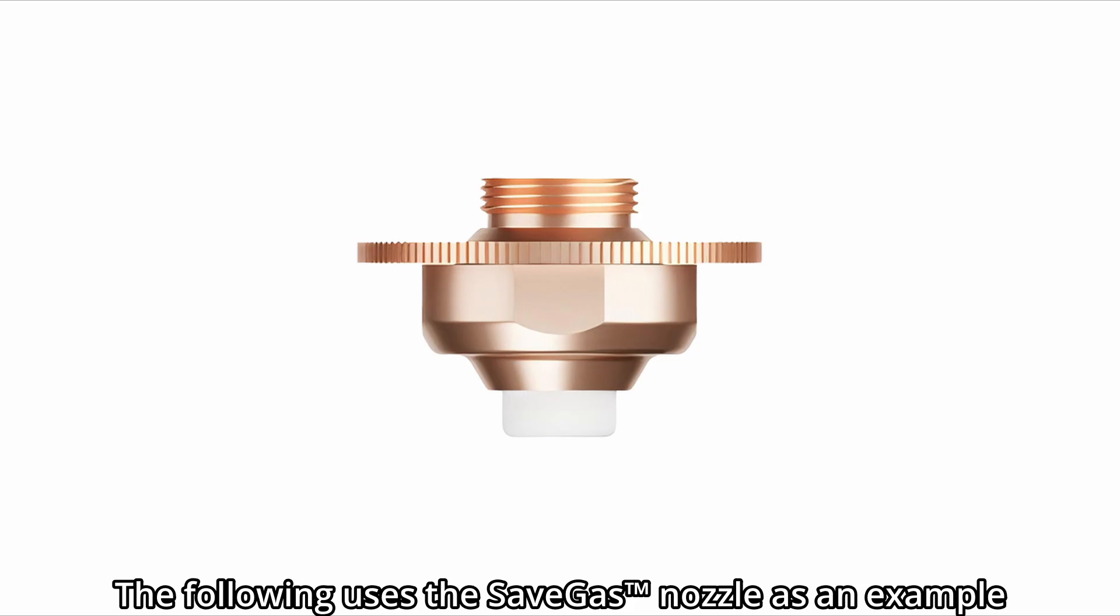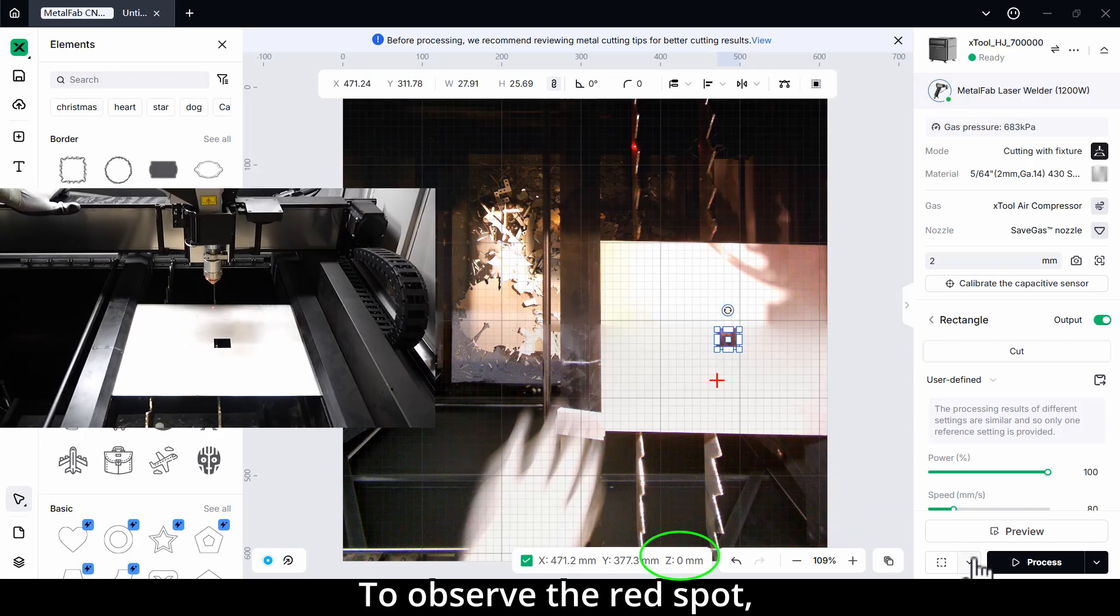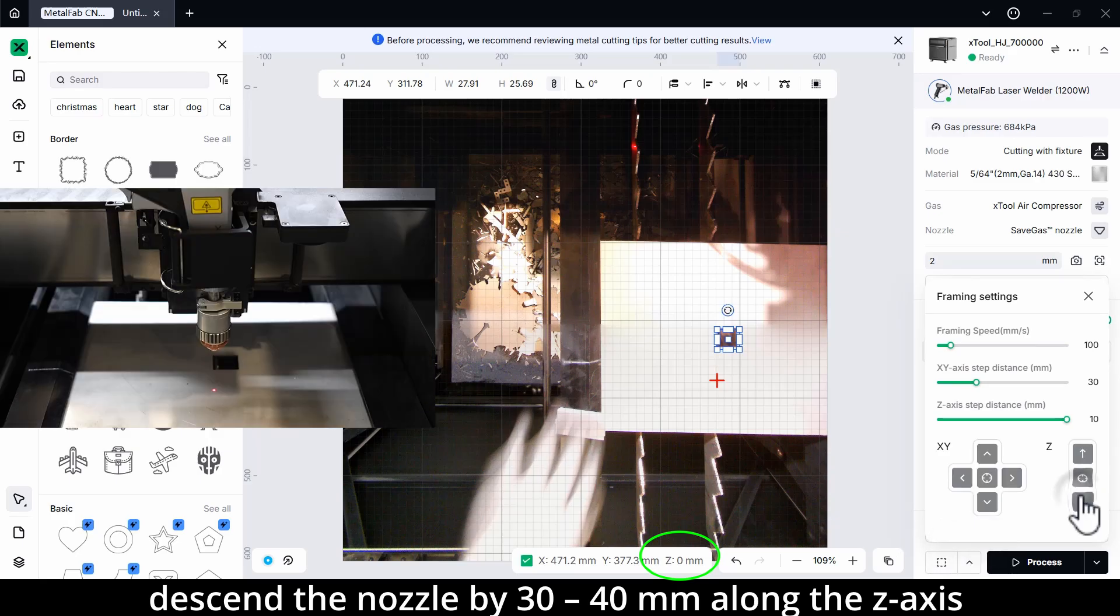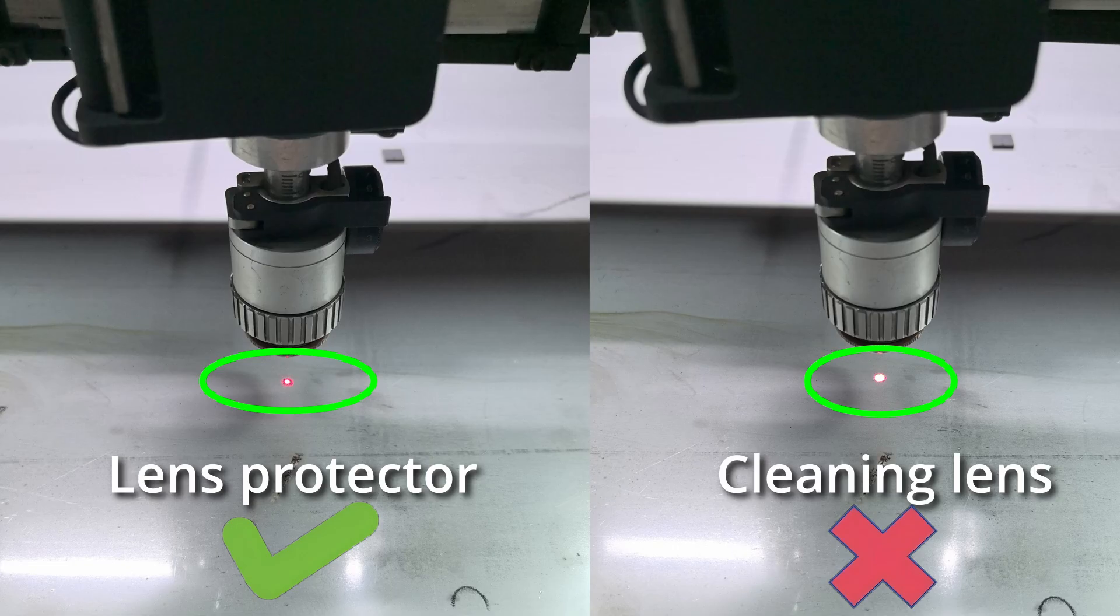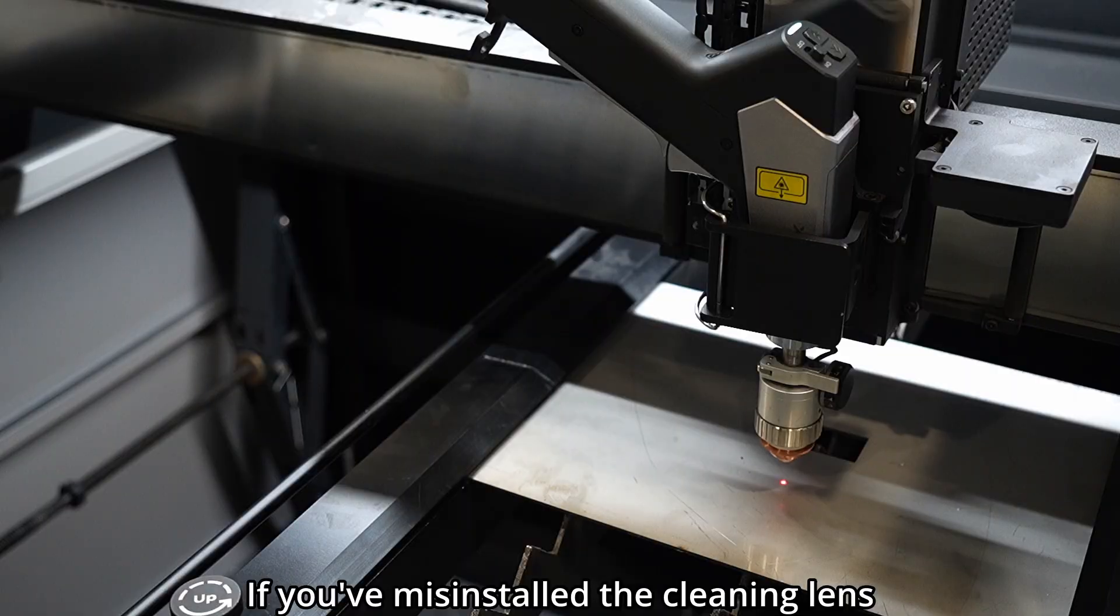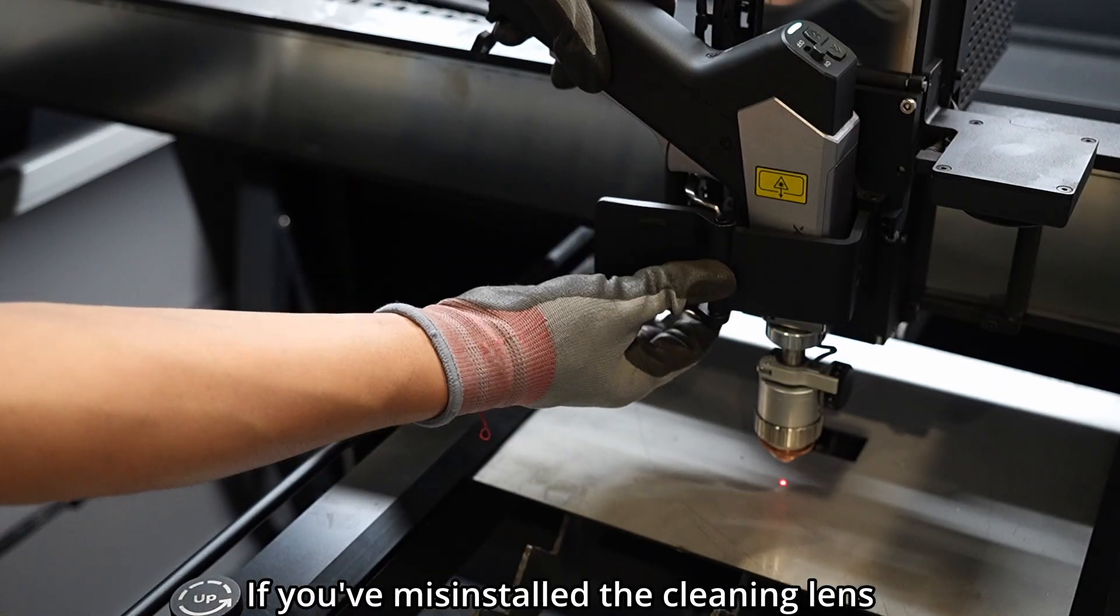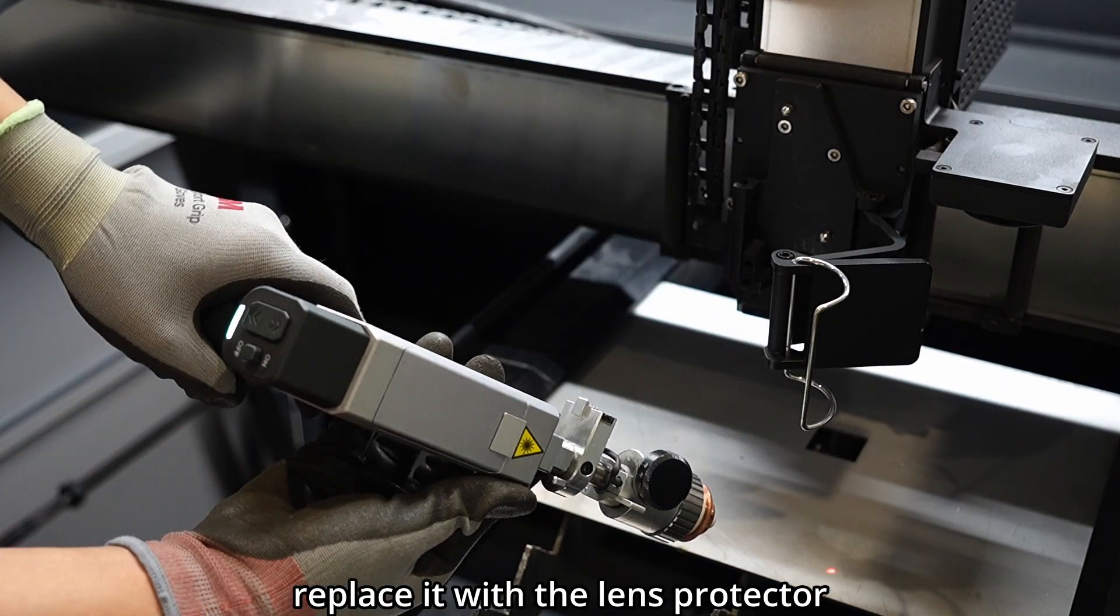The following uses the save gas nozzle as an example. To observe the red spot, descend the nozzle by 30 to 40 mm along the Z axis, descending the nozzle by 10 mm each time. If you've misinstalled the cleaning lens, replace it with the lens protector.